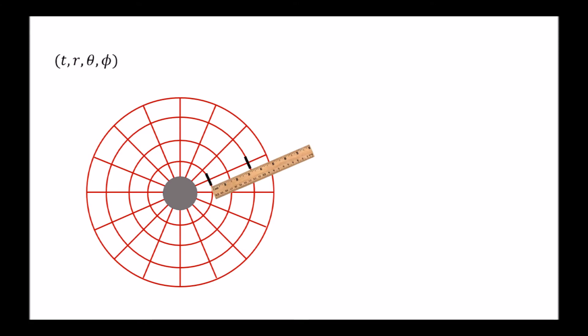Using an infinitely rigid meter stick, the distances along and perpendicular to the radius R would not be affected by the presence of the mass.